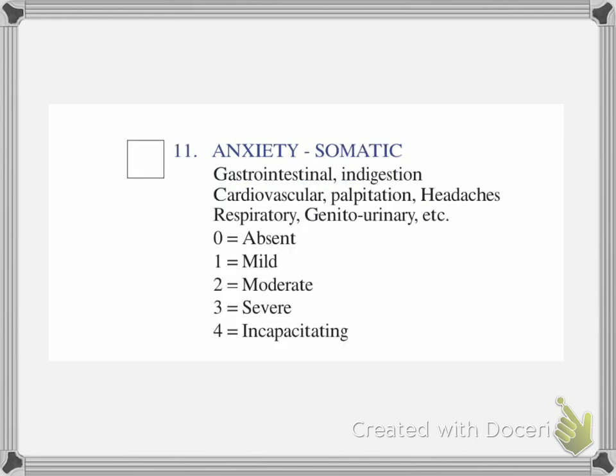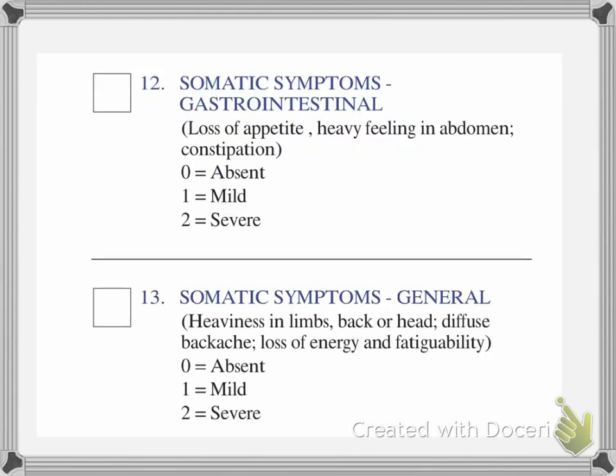Question eleven is somatic anxiety — how does the anxiety translate into physical symptoms? They may get stomach aches, palpitations, headaches, neck pain, or back pain, all the way to trouble seeing or an inability to speak, in which case you'd give that a four. If it's mild, it's a one; moderate is a two; severe is a three.